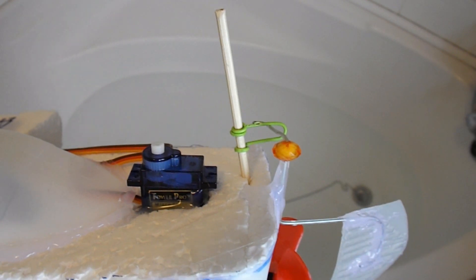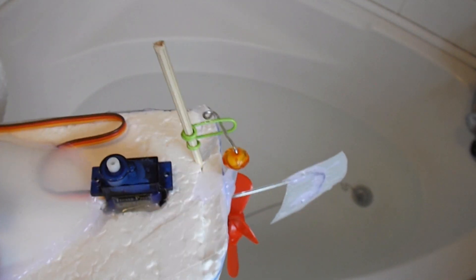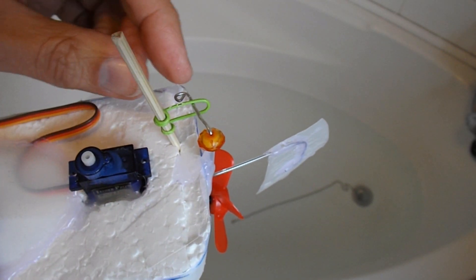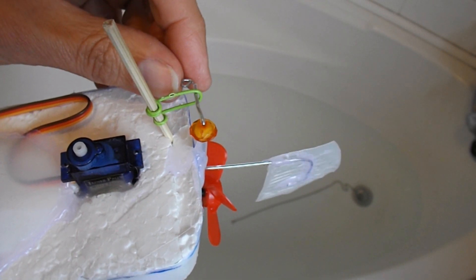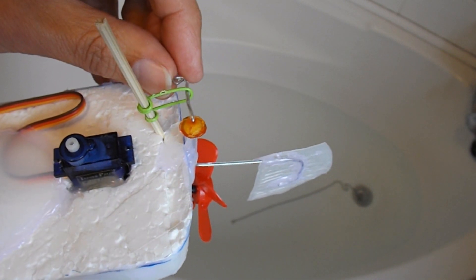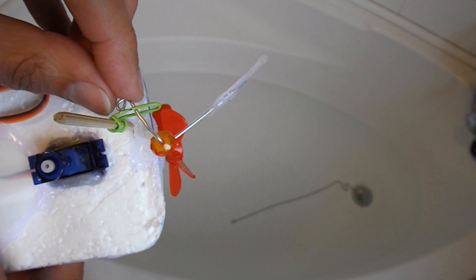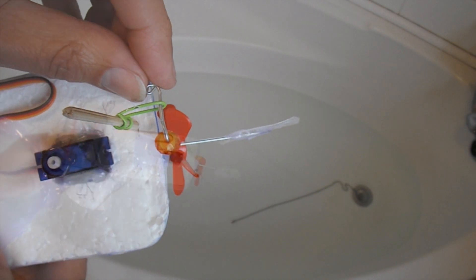Right, there's a quick modification. All I've done is bent a paper clip around my barbecue skewer so that now it can't swing round any further than that. So it can twist that way but it can't go any further that way.